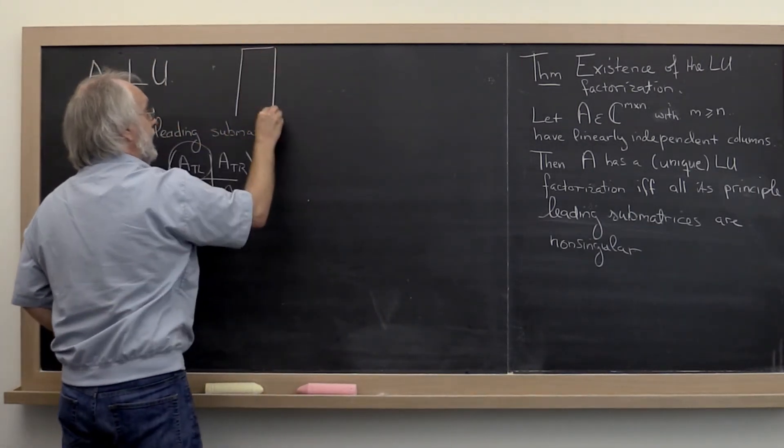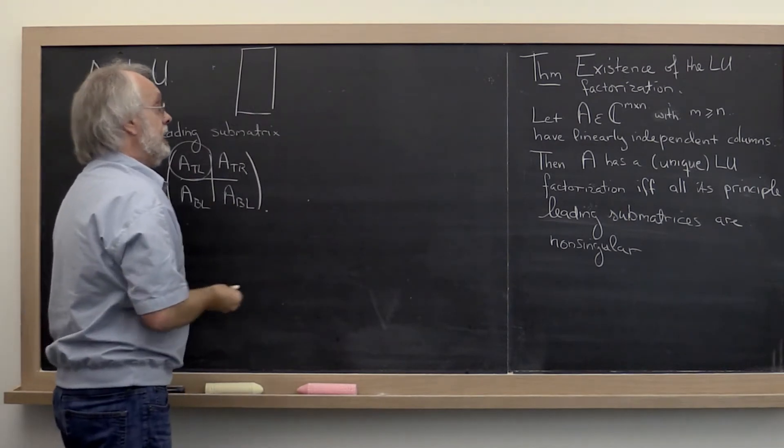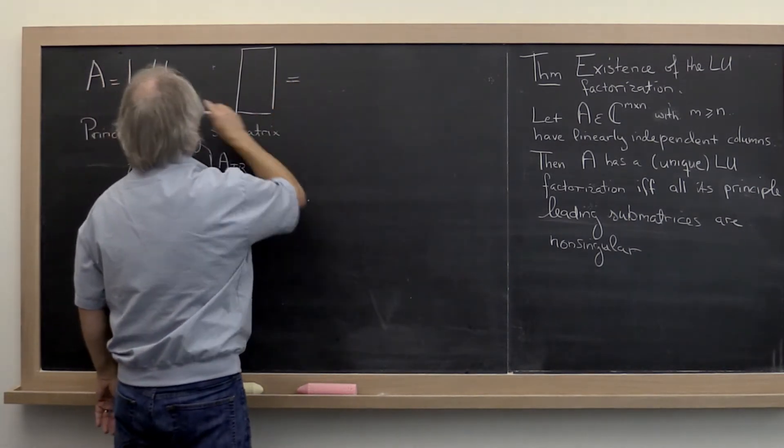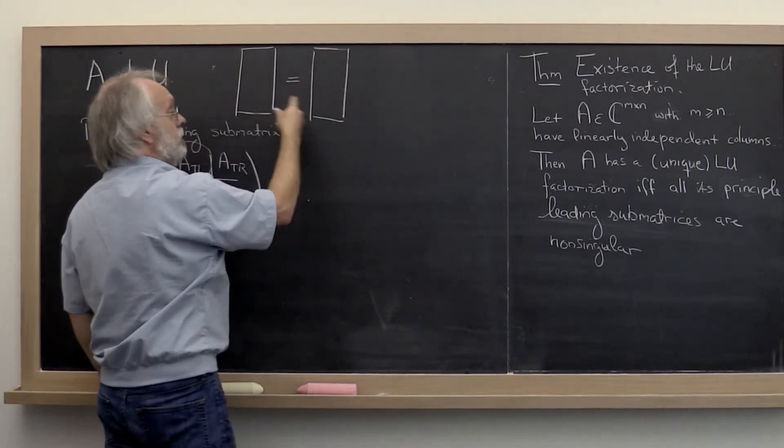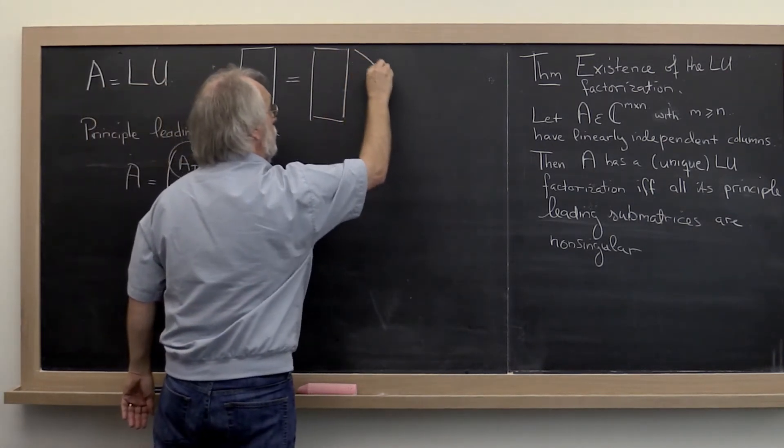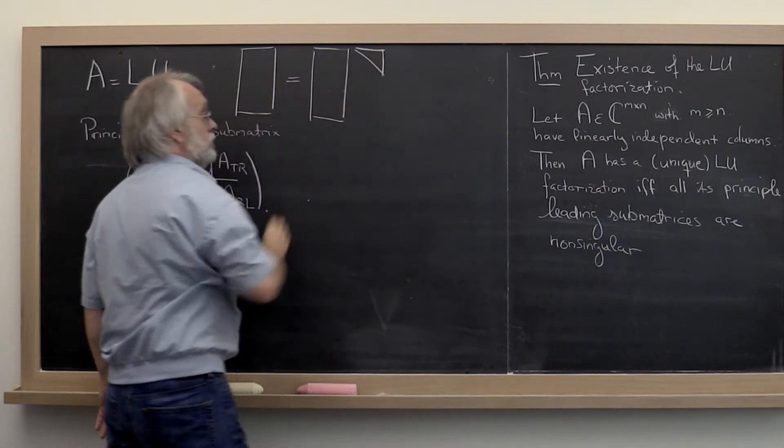If A is rectangular, then it will have a shape sort of like that. And if that's equal to L times U, then L has the same number of columns and U is upper triangular.